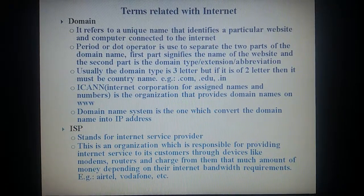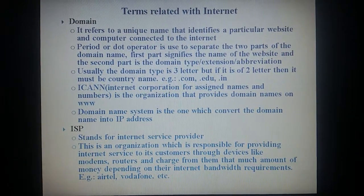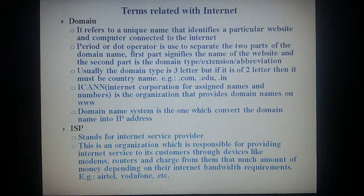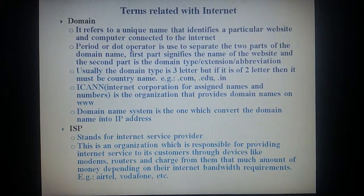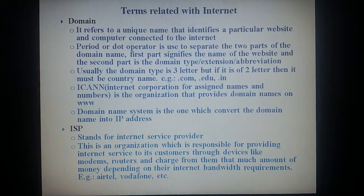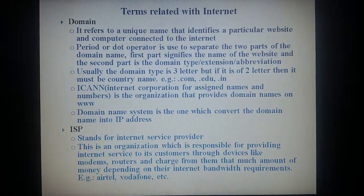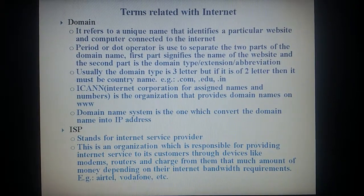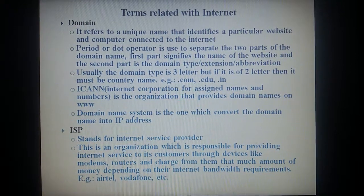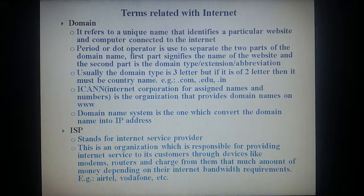Domain: it refers to a unique name that identifies a particular website and computer connected to the internet. A dot operator is used to separate the two parts of the domain name. The first part signifies the name of the website and the second part is the domain type or extension or abbreviation. Usually the domain type is three letters, but if it is two letters then it must be a country code like .com, .edu, .in. ICANN, which stands for Internet Corporation for Assigned Names and Numbers, is the organization that provides domain names on the World Wide Web.